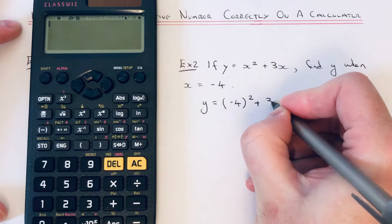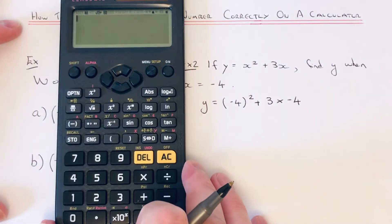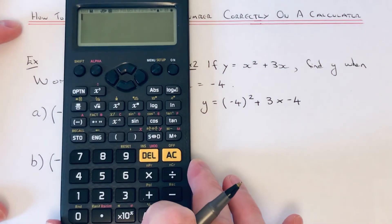And then it's plus 3 times minus 4. You could put a bracket on that one as well, but it won't make any difference there. It's only really when you're squaring a negative number you need to put that bracket there.